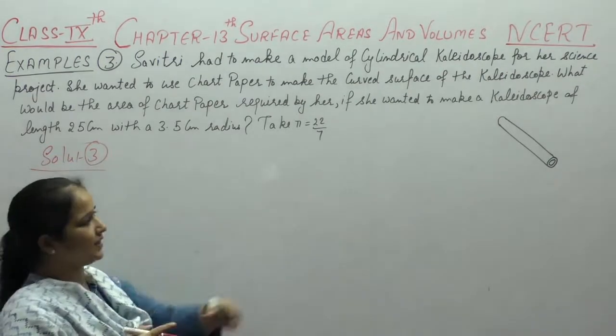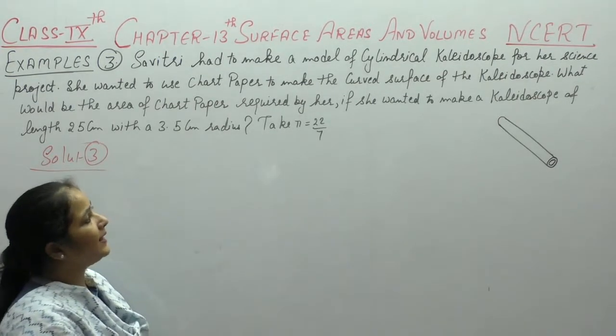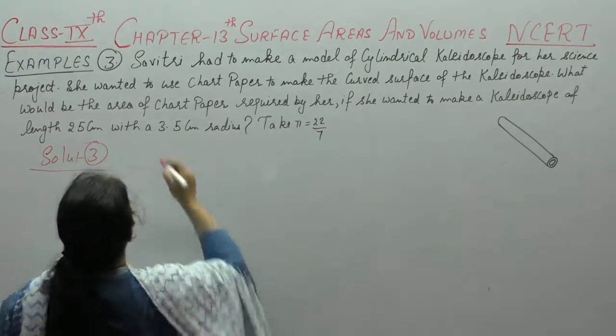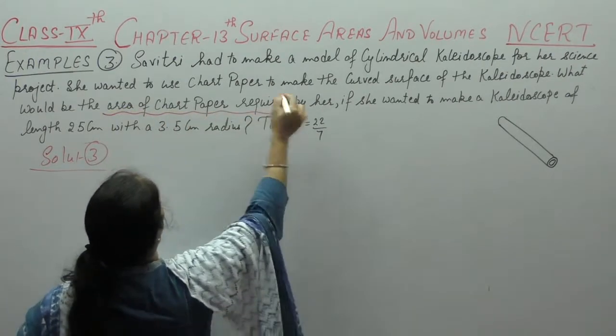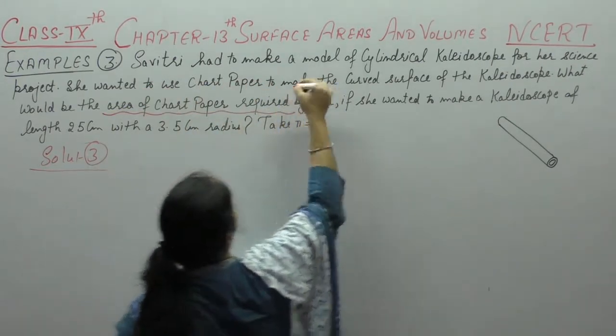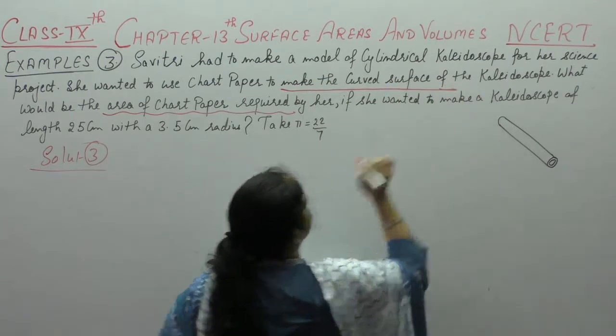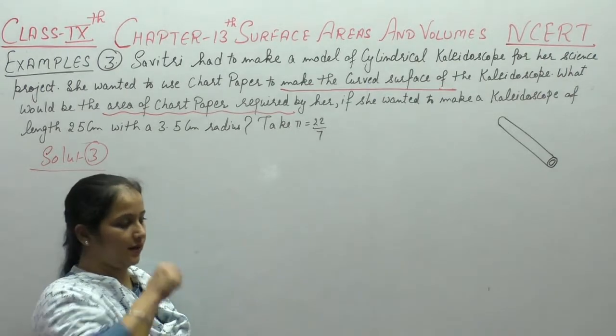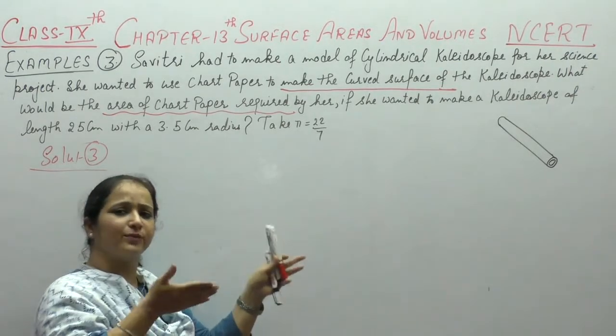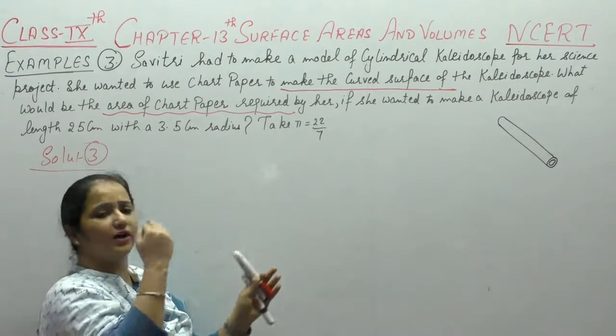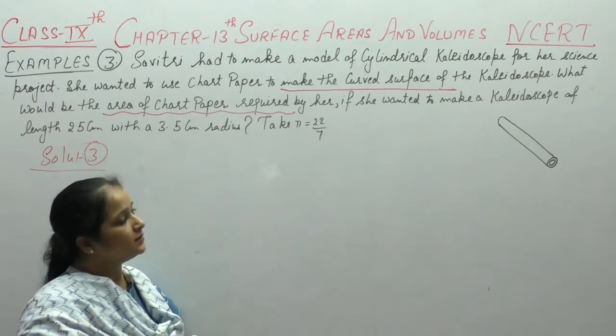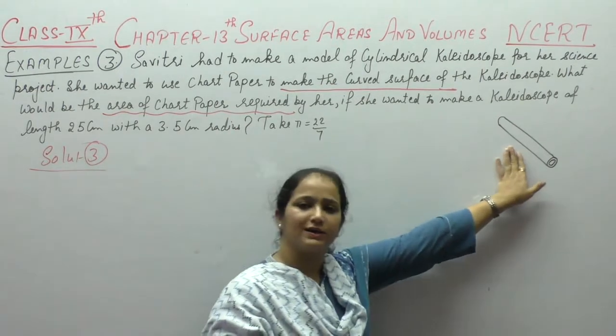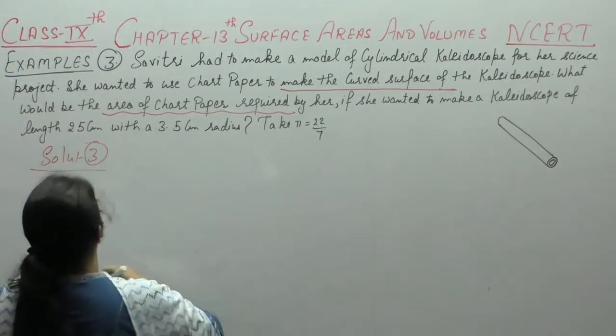The kaleidoscope is in cylindrical shape. It makes the curved surface cover the area of chart paper. Find it required. What should we do with chart paper? What should we do with curved surface cover? It means we find the curved surface area. Because the two sides are mirrors, the curved portion of the chart paper will be covered with the chart paper. We will find the area.